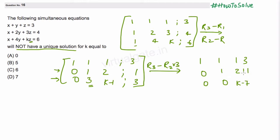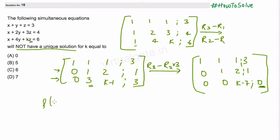The last entry in row 3 will become 0. So this zero value creates a condition that affects both the rank of the coefficient matrix A and the rank of the augmented matrix. Both ranks will depend on this value of k minus 7.